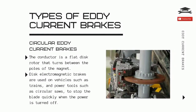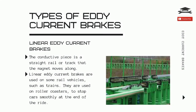The two common types of eddy current brakes are the circular or disc eddy current brakes, and the linear eddy current brakes. The circular eddy current brake system consists of a conductor, that is a flat disc rotor that turns between the poles of the magnet. Disc electromagnetic brakes are used on vehicles such as trains, and power tools such as circular saws, to stop the blade quickly when the power is turned off. The linear eddy current brake consists of a conductive piece in a straight rail or track that the magnet moves along. Linear eddy current brakes are used on some rail vehicles such as trains, and on roller coasters to stop cars smoothly at the end of the ride.